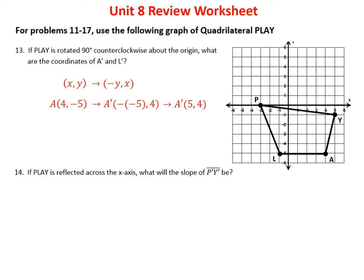For L at (−1, −5): switch to (−5, −1), then take the opposite of −5 which is +5, so L prime is (5, −1).